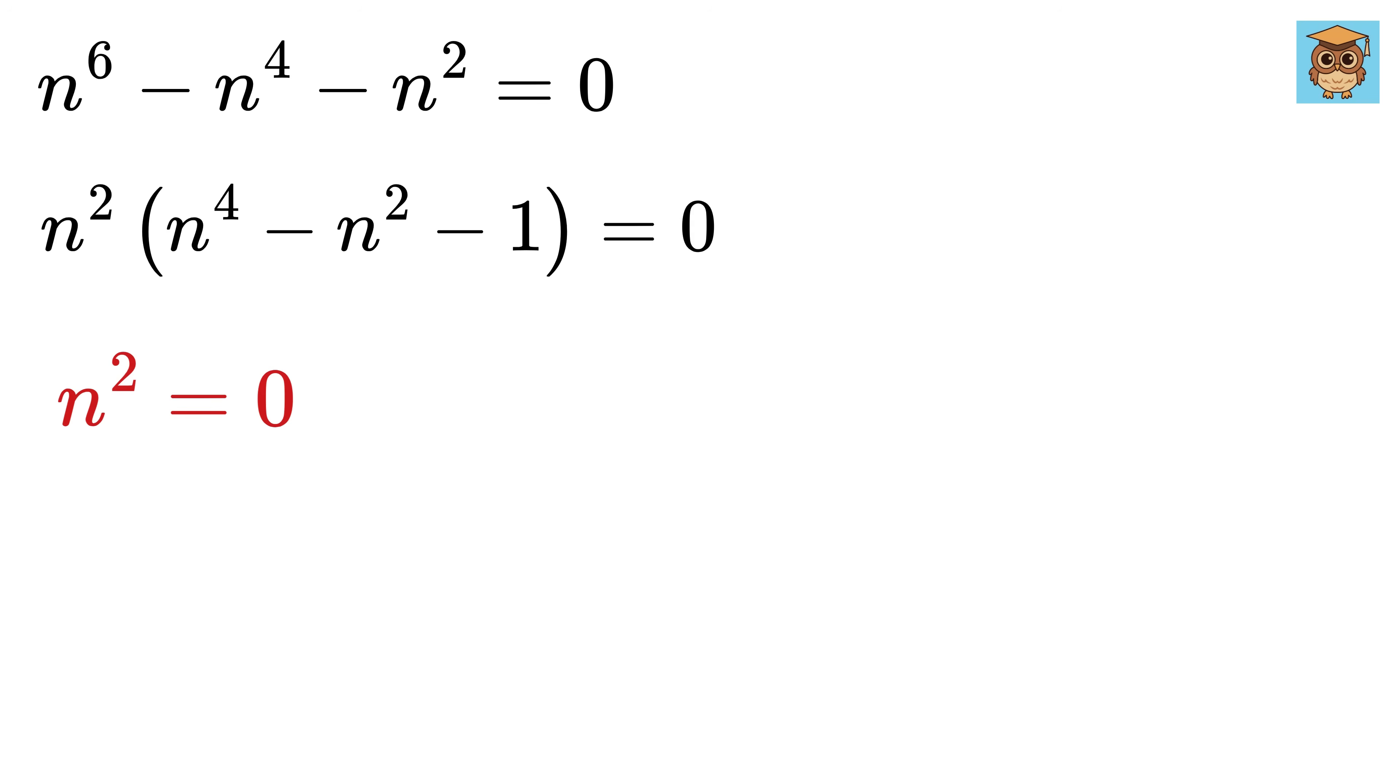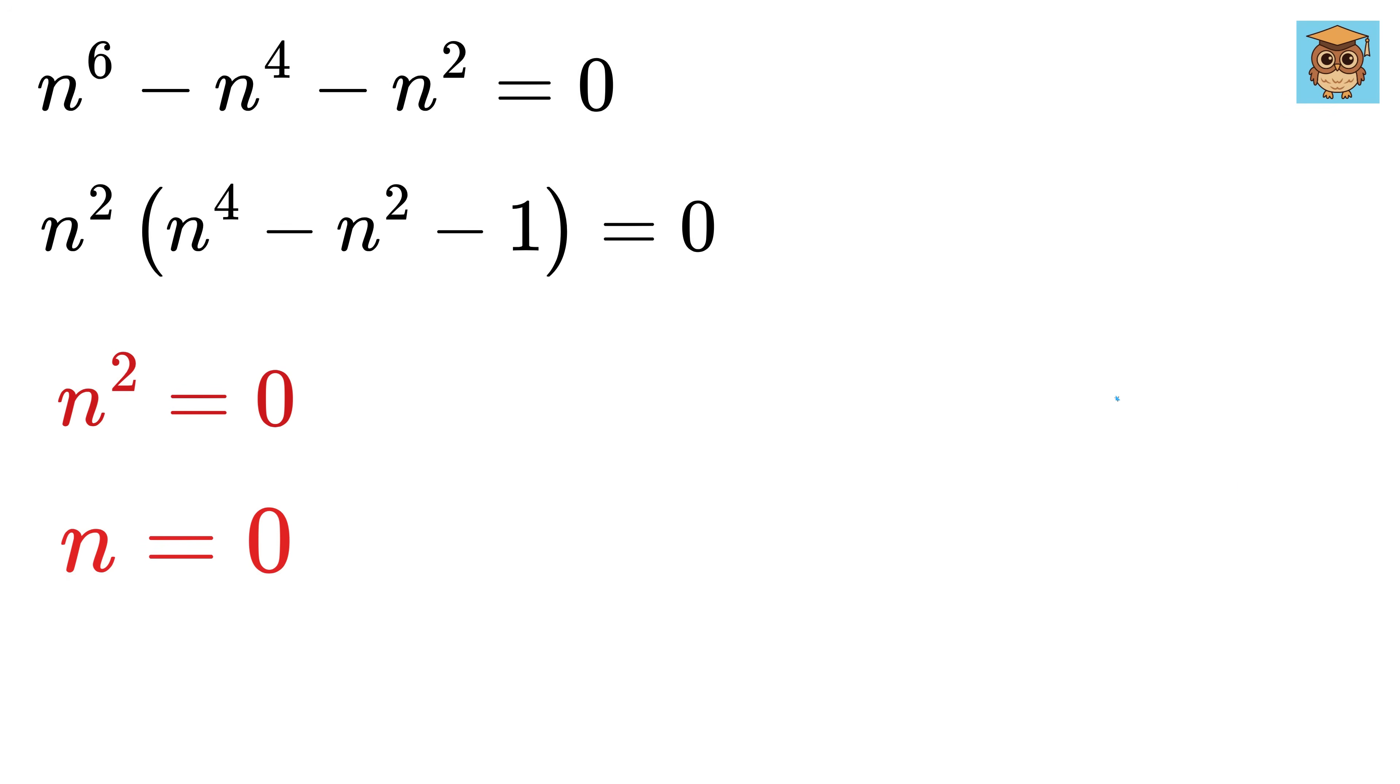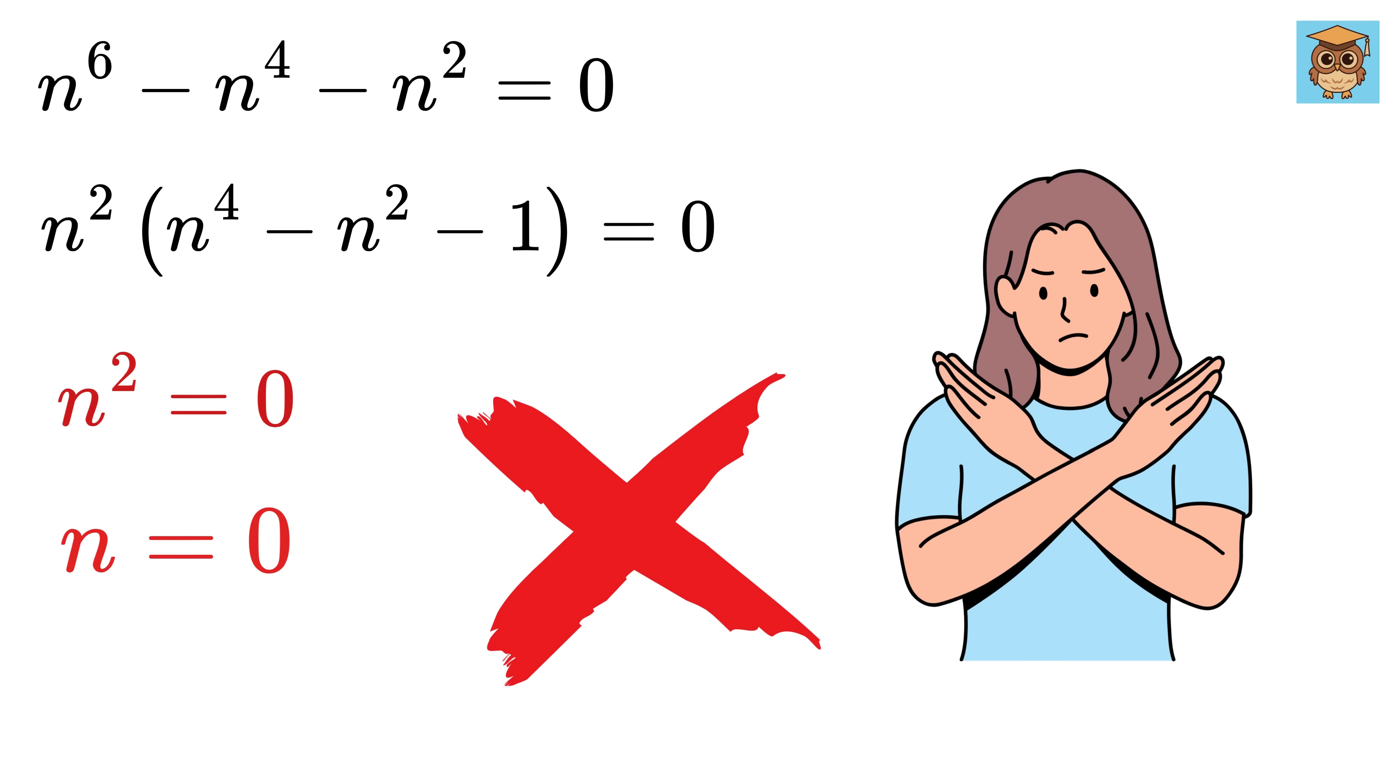This will give n square equals 0, which gives n equals 0. Now this is a trivial solution, but it essentially collapses the triangle into a point. So it is not a valid triangle.